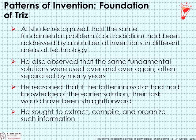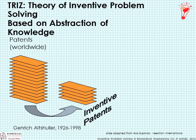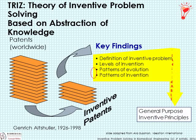He reasoned that if a later innovator had knowledge of the earlier solution, their task would have been much easier. He systematized that practice — seeking to extract, compile, and organize this information: a set of problems and corresponding solutions. He analyzed about 3 million worldwide patents, extracted what he considered truly inventive patents, divined patterns from them, developed definitions of invention, identified levels of inventions, and identified patterns of evolution and invention.